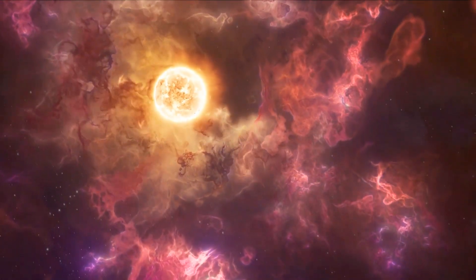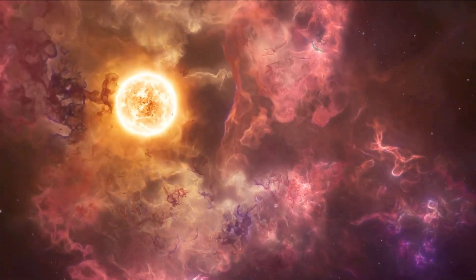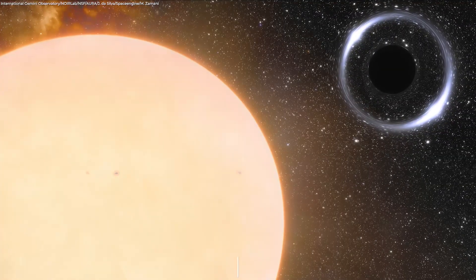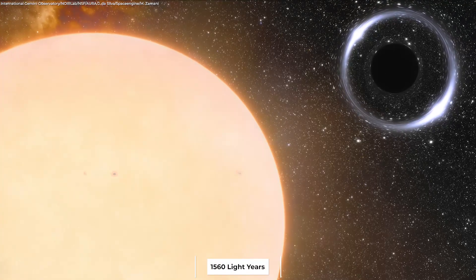This positioning makes them the closest known black holes to our sun, overshadowing the prior nearest candidate, Gaia BH-1, located a distant 1,560 light-years away.